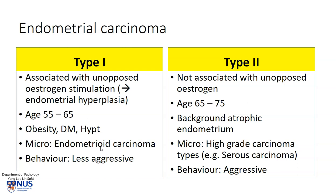Microscopically, these tumors are generally relatively well differentiated and have the features of endometrioid carcinoma, one of the commonest histologic types of endometrial carcinoma. It is generally a little bit less aggressive in terms of behavior, so the prognosis is better. This is in contrast to Type 2 endometrial carcinoma, which is not associated with a history of unopposed estrogen or a background of endometrial hyperplasia. It usually occurs in a slightly older age group and the background endometrium is generally atrophic rather than hyperplastic.